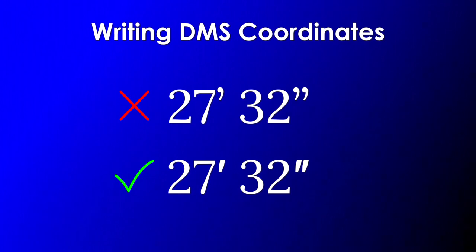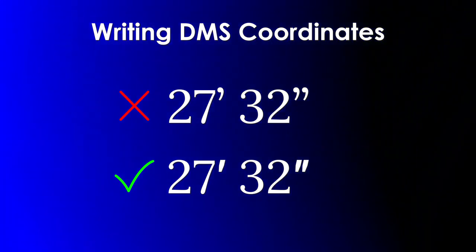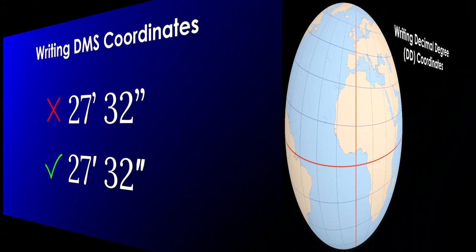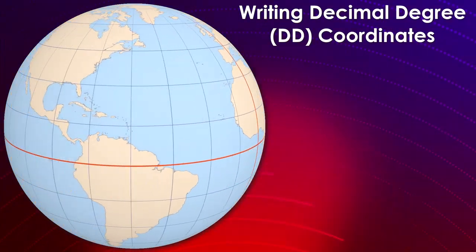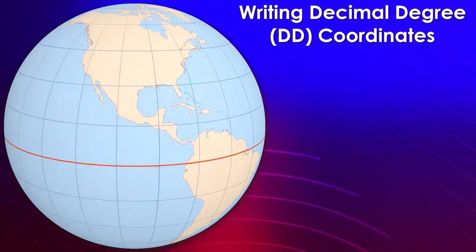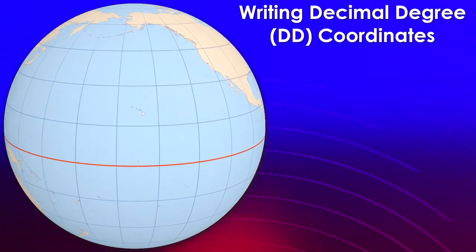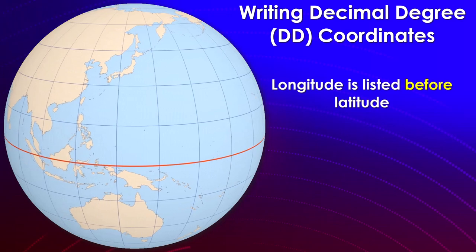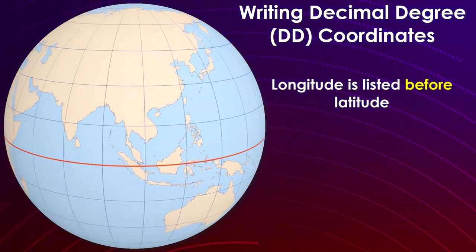The first way of defining position is DMS. The second way is decimal degrees, or DD. There are some differences between decimal degrees and DMS. First of all, longitude is listed before latitude in decimal degrees, so this is the opposite of DMS.